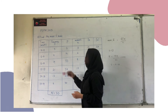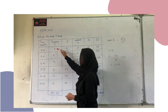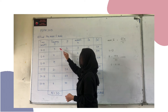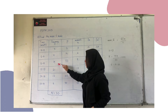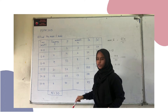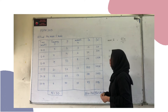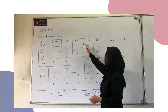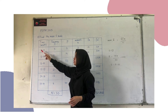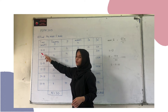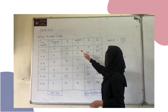To get the cumulative frequency, we need to add the frequencies cumulatively. So 5, then 5 plus 9 equals 14, then 14 plus 19 equals 33, and so on. For midpoint, we add the lower and upper class boundaries and divide by 2.